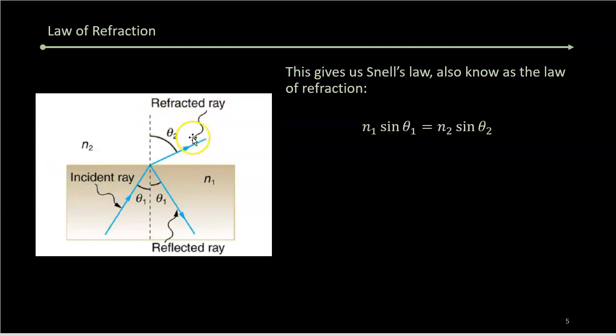If n₂ were more optically dense, the light would actually bend towards this ray. So if, let's say, n₂ is greater than n₁, then the light when it comes into n₂ here would be closer to this axis, not farther away.